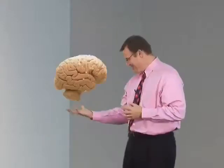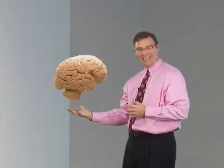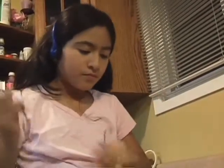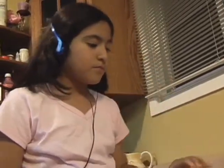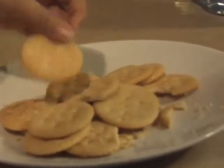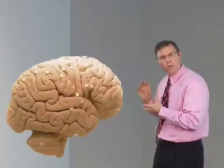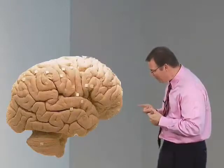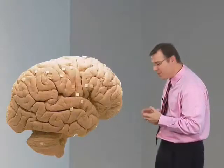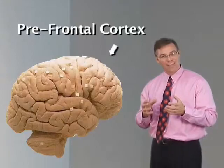Before we start talking about question structure, let's take a look at the most important structure we use in learning: the brain. If we look at the back of the brain, that's where we're processing all the information coming in — what we're seeing, hearing, smelling. But what we really want to do is get it up here in the front of the brain, because that's where thinking happens — up in the prefrontal cortex.